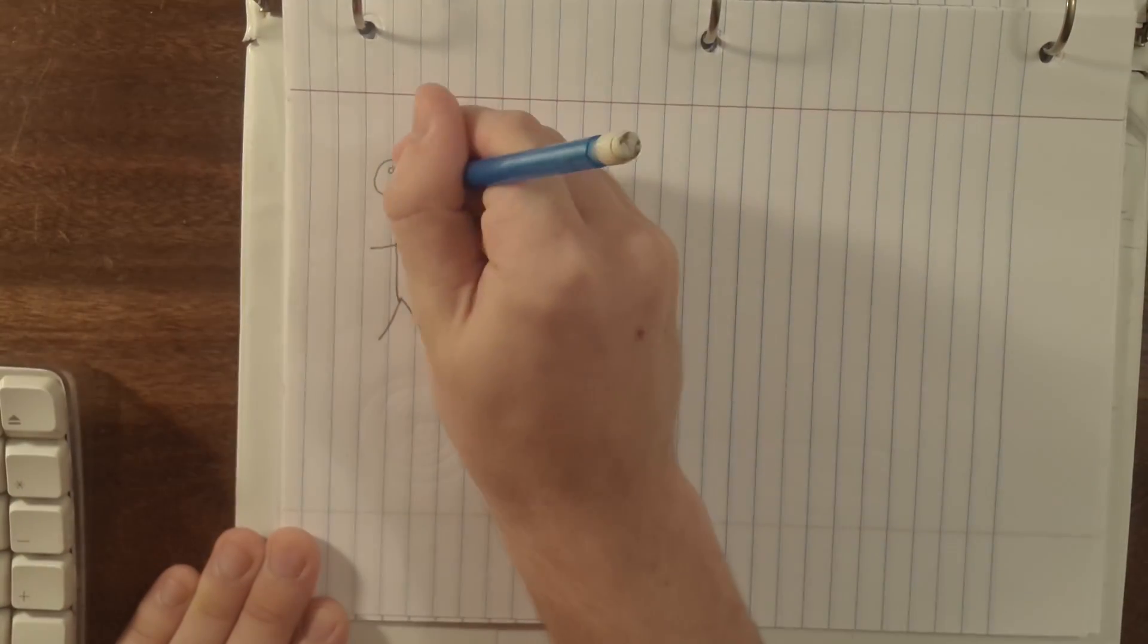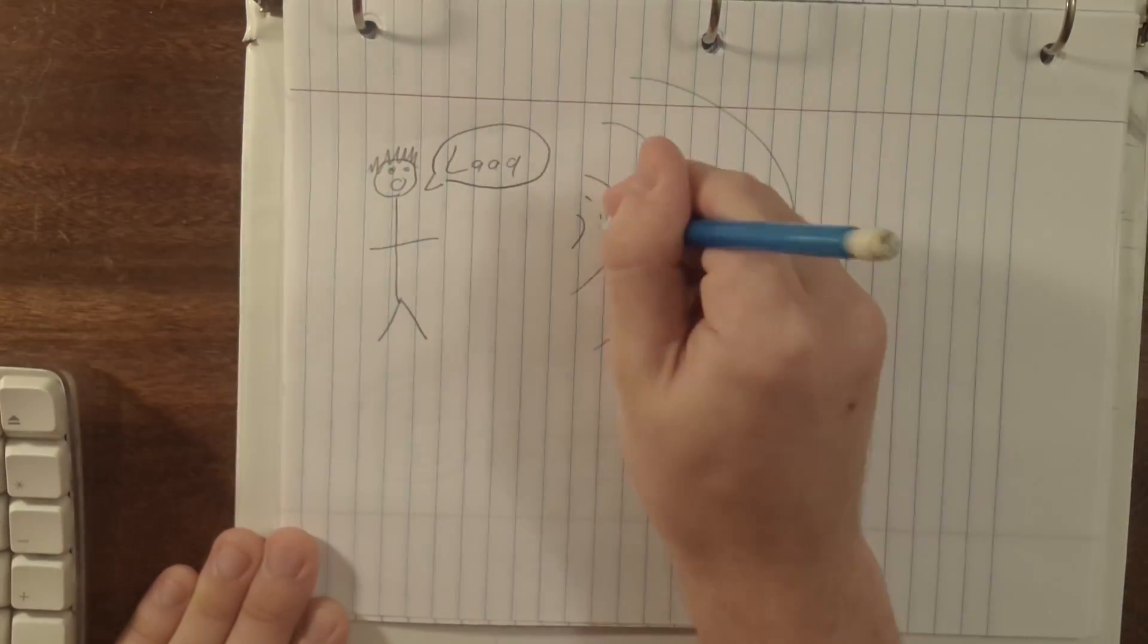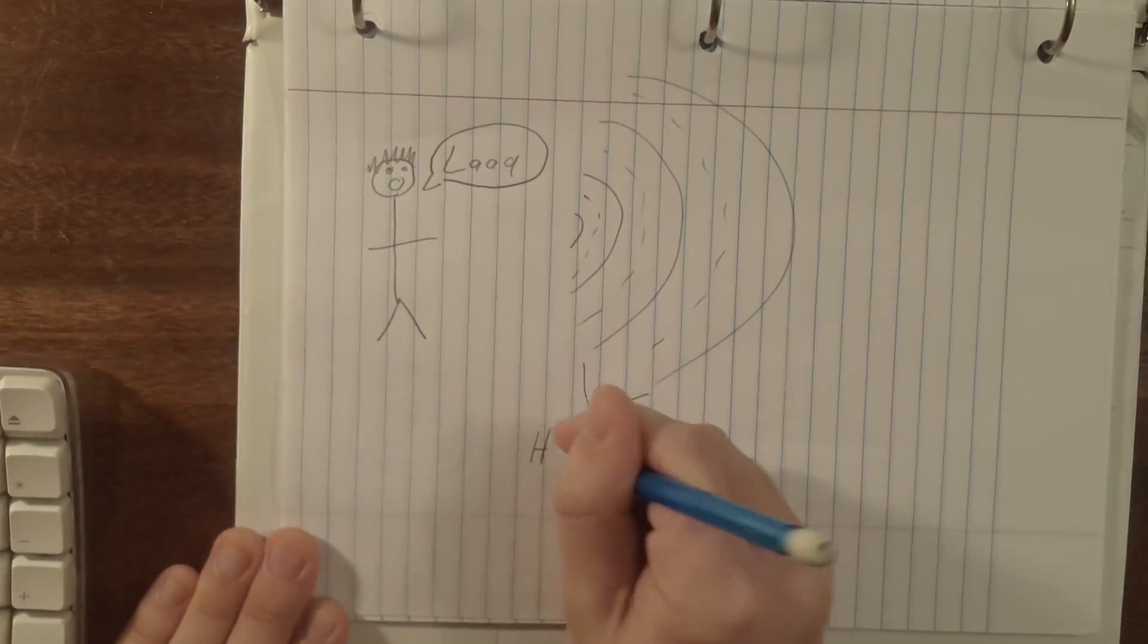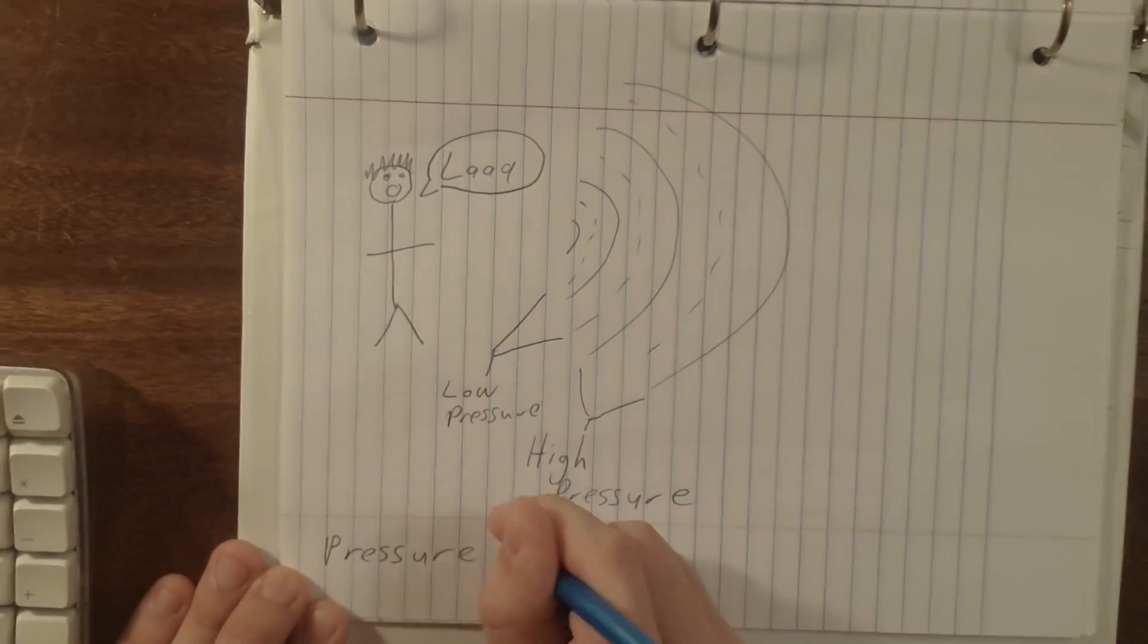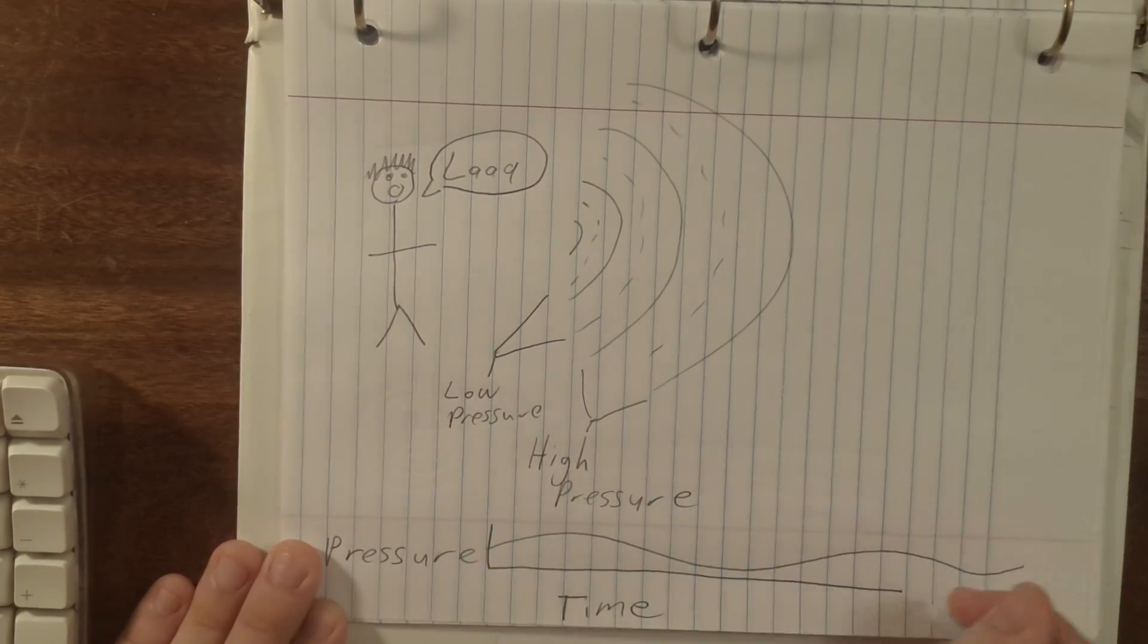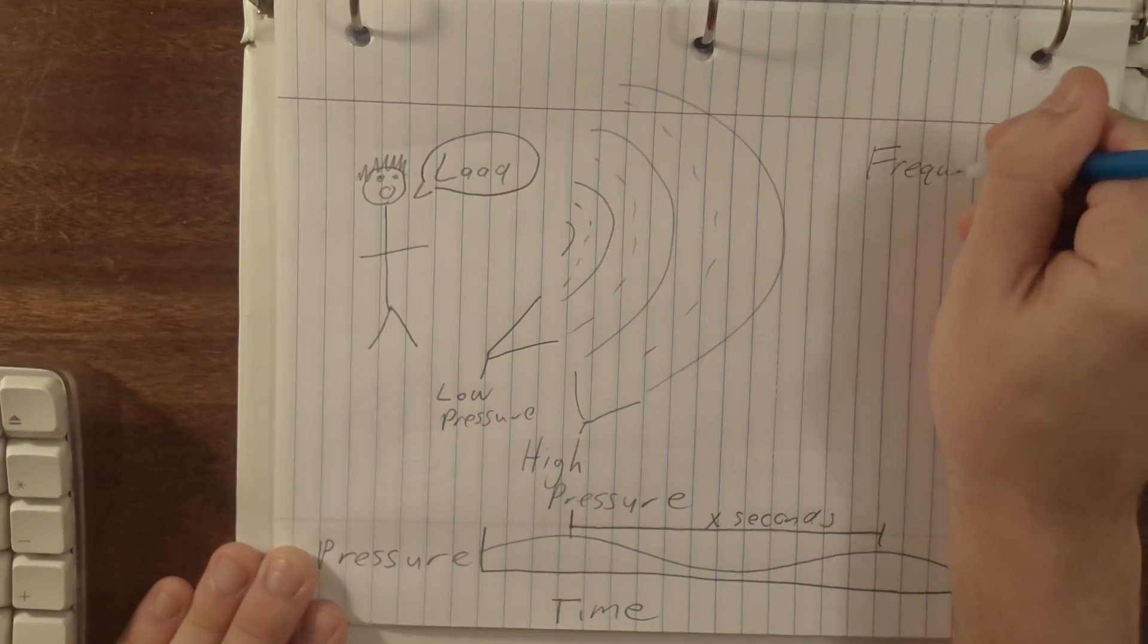Sound is waves of pressure that travel through the air. The rate at which the high and the low pressures alternate is referred to as the sound's frequency. Note that the word frequency, though often used synonymously with the word pitch, actually refers directly to how frequent the pressure oscillations are.